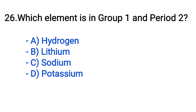Question number 26. Which element is in group 1 and period 2? Option A: Hydrogen. B: Lithium. C: Sodium. D: Potassium. The correct answer is option B, Lithium.